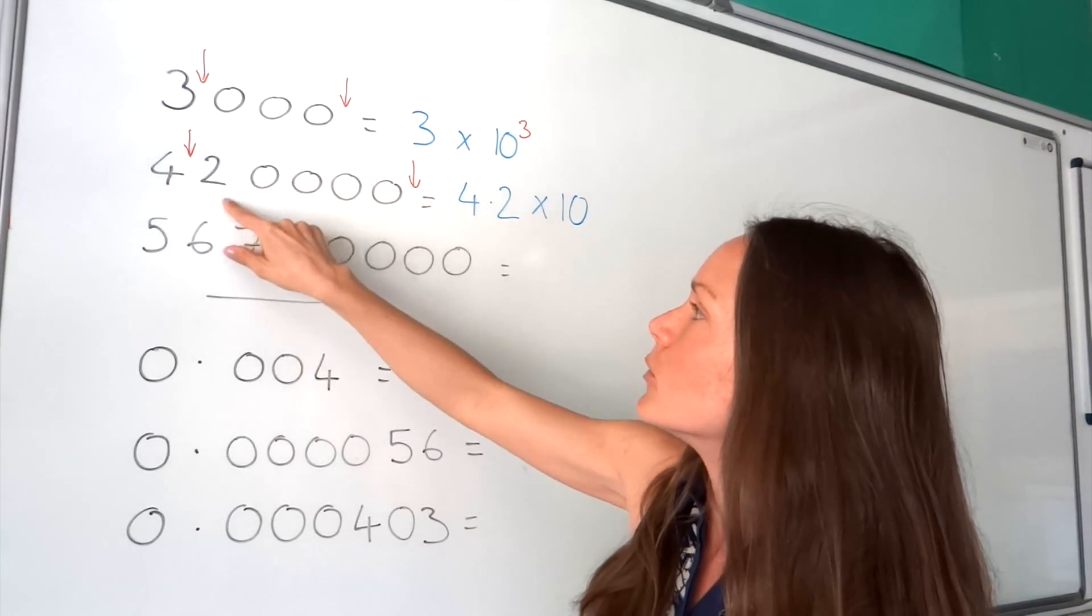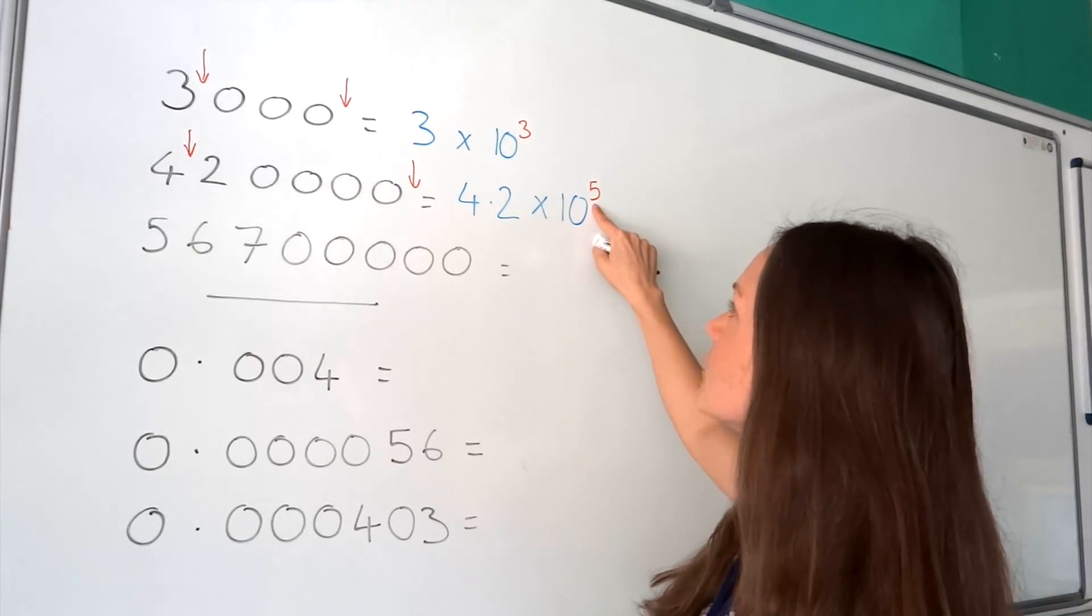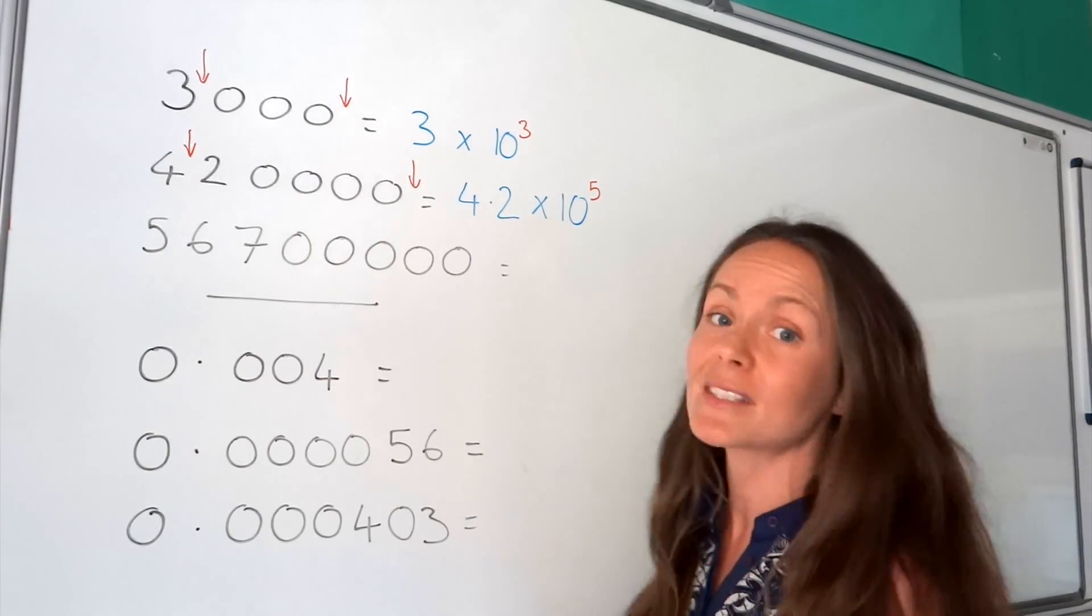So when I check this time, 1, 2, 3, 4, 5, it's moved 5 places. So the power on the 10 is 5. Okay, so this number is now in standard form.